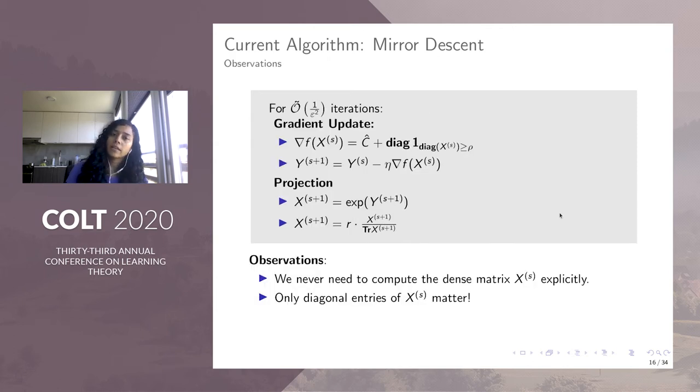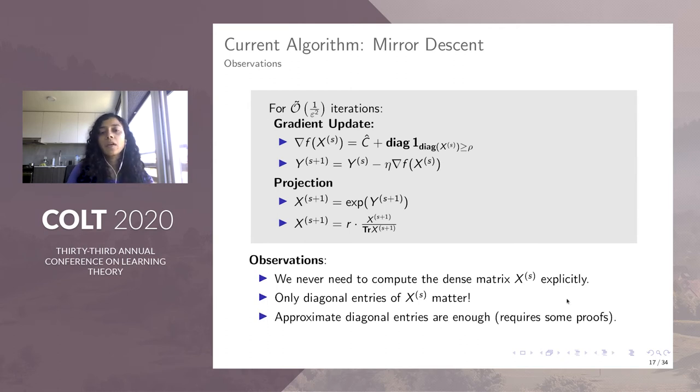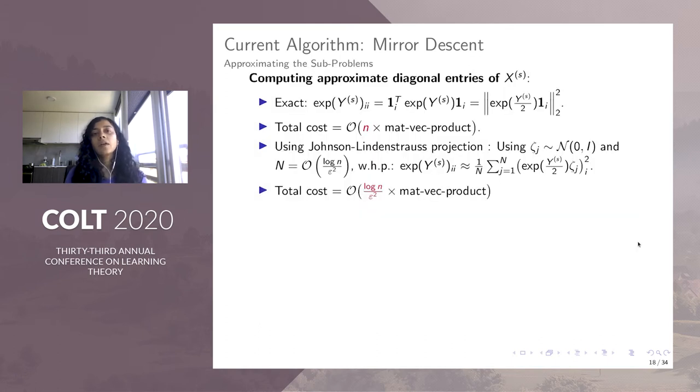These two steps are performed over 1 over epsilon square iterations. And this number of iterations comes from the convergence guarantee of mirror descent. An important observation of Arora and Kali was that this algorithm does not require the full matrix X to be computed. Note that in the gradient step, you use only the diagonal entries of X. And even in the projection step, you require only the trace of X, which depends only on the diagonal entries. Using some additional proofs, you can show that you don't even need the exact diagonal entries of X and the approximate diagonal entries actually suffice.